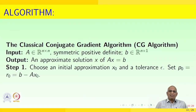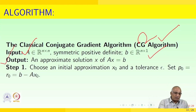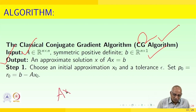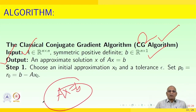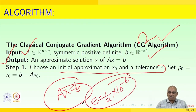The classical conjugate gradient algorithm is as follows. Input: A ∈ ℝⁿˣⁿ symmetric positive definite, b ∈ ℝⁿ. Output: an approximate solution x to Ax = b. Step 1: choose an initial approximation x₀ and a tolerance ε (typically ε = 10⁻⁶). Set r₀ = b − Ax₀.